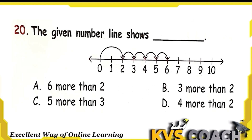The next question: the given number line shows what operation? There are 2 jumps first, then 1, 2, 3, 4 steps of 1 each — that is 4 more than 2. Option D is the right answer.